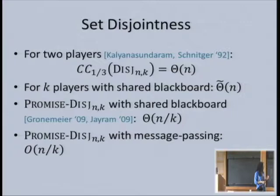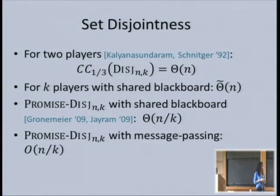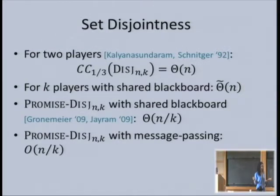The algorithm is based on the fact that if you give the promise, many sets need to have size at most n/k. If you find two players with small sets, they can just talk to each other and figure out if they have an intersection, because that tells the global answer. So what we do is sample players until we find a pair that can settle it.